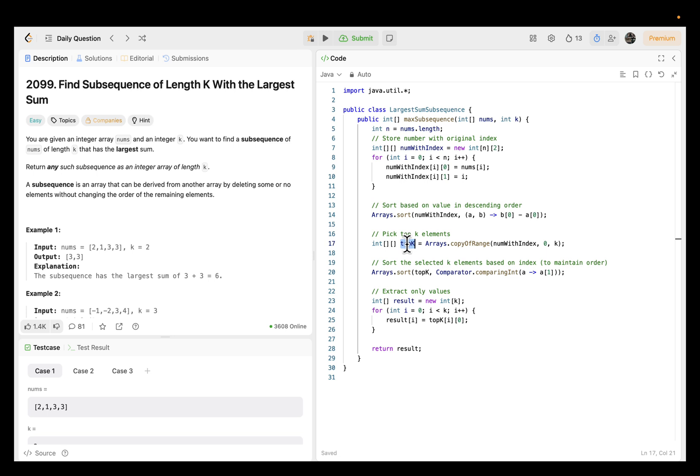Now you have to apply the custom sorting again on the basis of their indices. Arrays.sort top K, comparing integer value, array of one. Or you can use something like this. So these are just two ways in Java. So on the basis of one item, one value is their index. So on the basis of their index I have sorted in increasing order. And after that, just extract out those values. Those values are my answer.